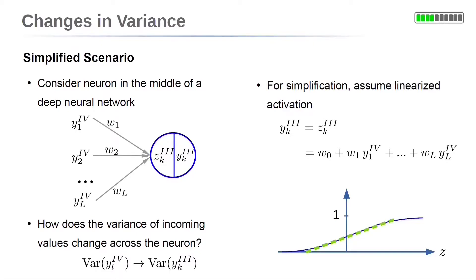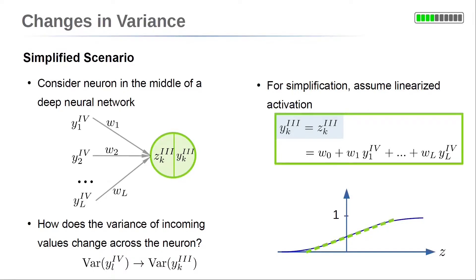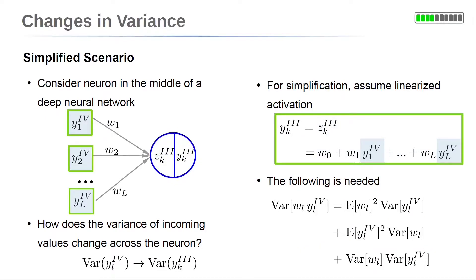For simplification, we assume a linearized activation function. For example, for the sigmoid activation, this assumption holds in the transition region from 0 to 1 as sketched on the lower right side. Then the output of the k-th neuron in layer 3, yk³, is equal to the summation zk³ of the neuron. This summation is given by a bias term, here denoted by w0, and the linear combination of the inputs of this neuron with the weights. The inputs are the capital L outputs, yl⁴, from layer number 4.